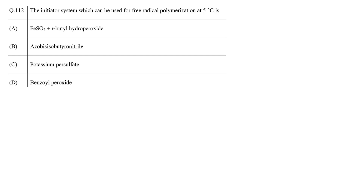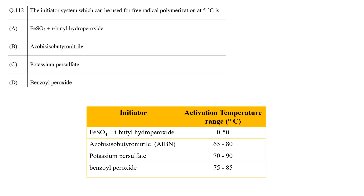This includes temperatures less than 0 degrees Celsius. In the given table, the activation temperature of each initiator is provided. Based on this information, the ferrous sulfate and tertiary butyl hydroperoxide initiator, which is a redox initiator, can be used for low temperature polymerization reactions. So the correct answer is A.